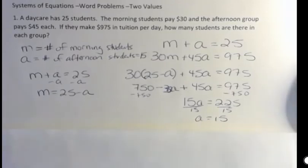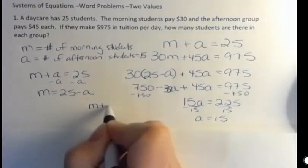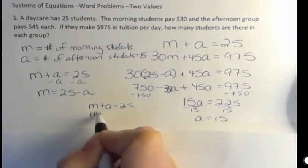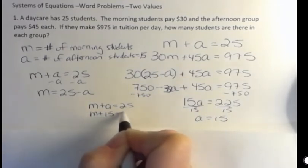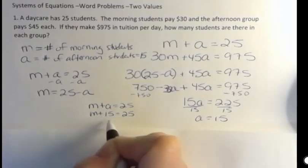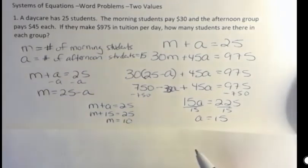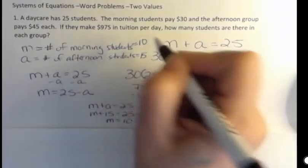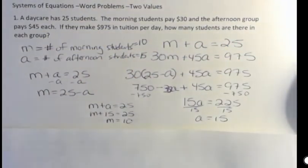So how many students are in the morning? Well, I know that the morning plus the afternoon is 25. So if I know that the afternoon students total 15, then I know that there must be 10 morning students, right? So if I've identified my variables up here, I can say, oh, number of morning students is 10, number of afternoon students is 15.